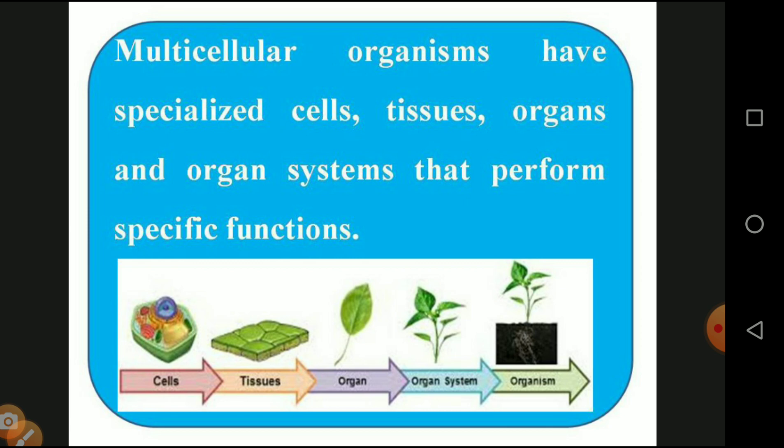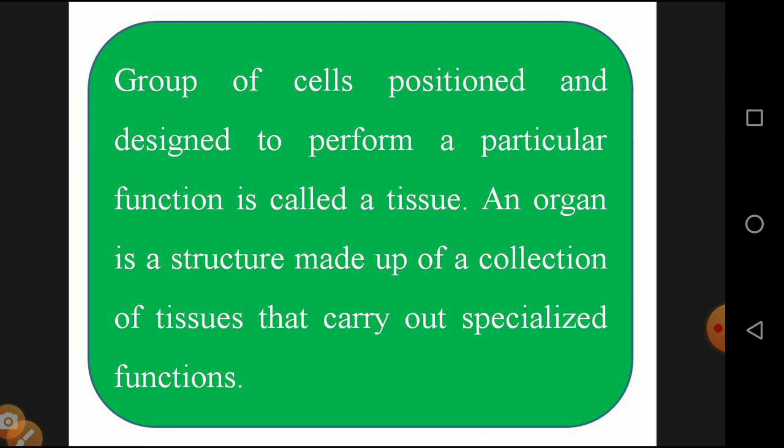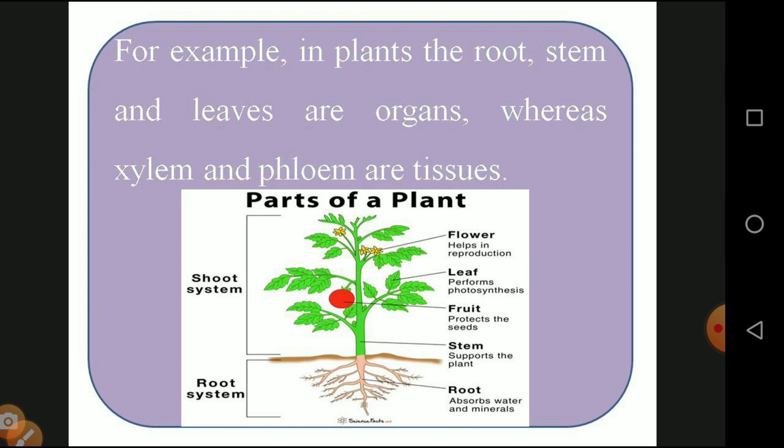The small piece you chew after cooking, embedded with your teeth, represents cells. A group of cells positioned and designed to perform a particular function is called tissue. An organ structure is made up of a collection of tissues that carry out specialized functions. For example, the heart is an organ that performs only the pumping function - not digestion, excretion, or respiration. In plants, roots, stem, and leaf are organs, whereas xylem and phloem are the tissues.